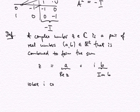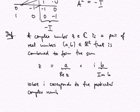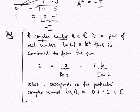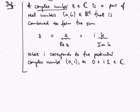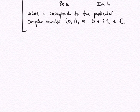So i corresponds to a particular complex number, 0 plus i times 1, which is certainly important to see. In some sense there is an equivalence with R² — only that we have to define a specific multiplication on R² to get the set of complex numbers. Let's first talk about addition of complex numbers.